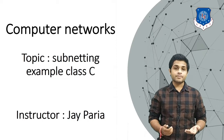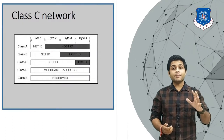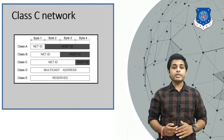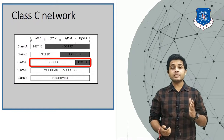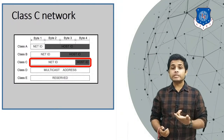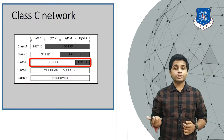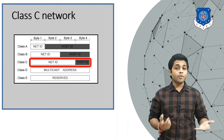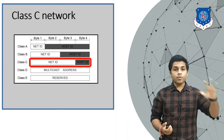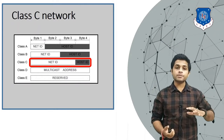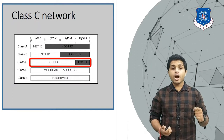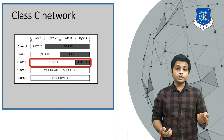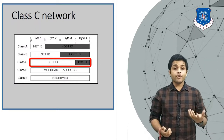We know that the total IPv4 addresses are divided into five classes: A, B, C, D, and E. We are only interested in Class C. In Class C, the first three bytes — 24 bits — are for the Network ID and 8 bits are for the Host ID. From the Network ID, you can determine how many networks are possible in Class C: 2 raised to 24 individual networks.